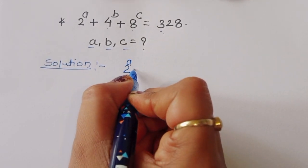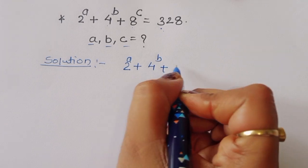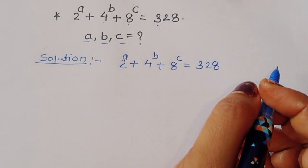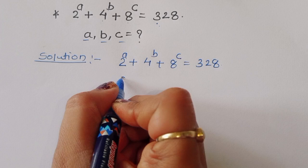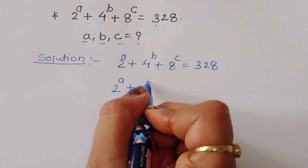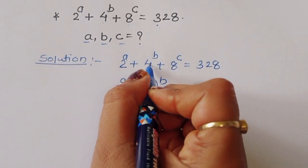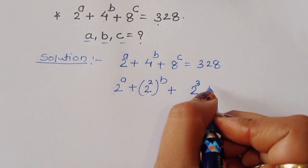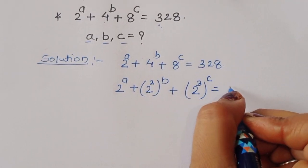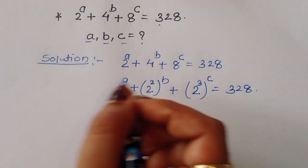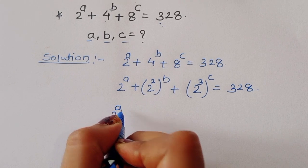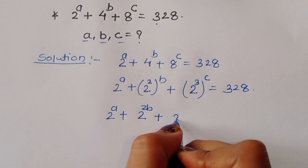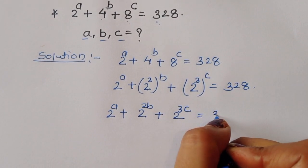We are given 2^A + 4^B + 8^C = 328. We can rewrite this as 2^A + 2^(2B) + 2^(3C) = 328, since 4 = 2^2 and 8 = 2^3.